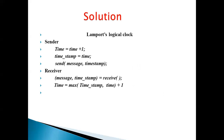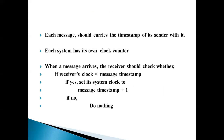Lambert's logical clock. This is the algorithm. For the sender: time = time + 1, timestamp = time, send message with timestamp. For the receiver: message timestamp = received timestamp, time = maximum of (timestamp, time) + 1. Each message should carry the timestamp of its sender. Each system has its own clock counter. When a message arrives, the receiver checks whether its clock is less than the message timestamp. If yes, set its clock to message timestamp + 1. If no, do nothing.